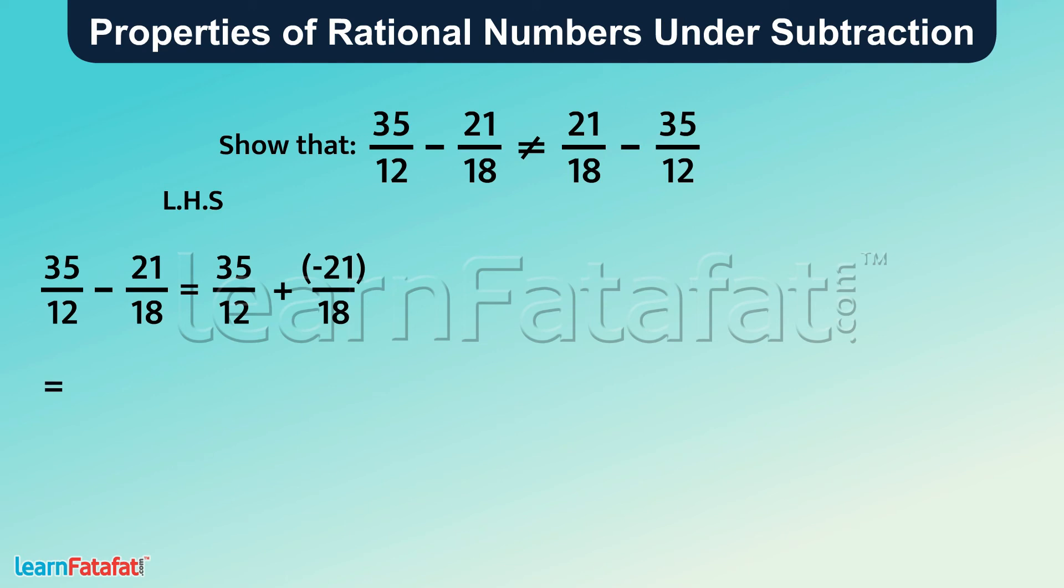So we get 105 divided by 36 plus minus 42 by 36, which equals 105 plus minus 42 divided by 36, equals 63 by 36.